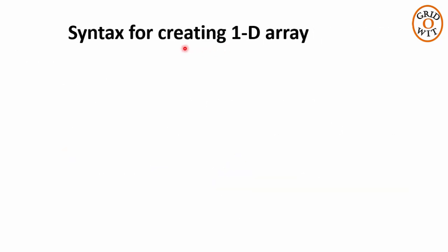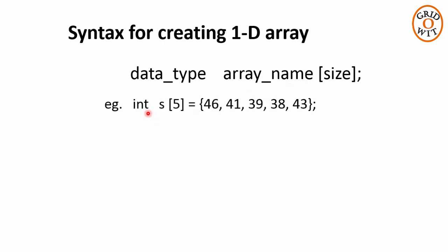Let us see the syntax for creating one dimensional array in C programming language. First is data type, then array name, followed by a constant value in square brackets, which represents the size of the array, that is the number of elements in the array. For example, here int is the data type, s is the name of the array, and 5 represents the number of elements in the array. Now to initialize the array while declaration, you can assign all the 5 values in the curly brackets. With this statement, an array of 5 elements will be created, and these 5 values will be stored in this array s.